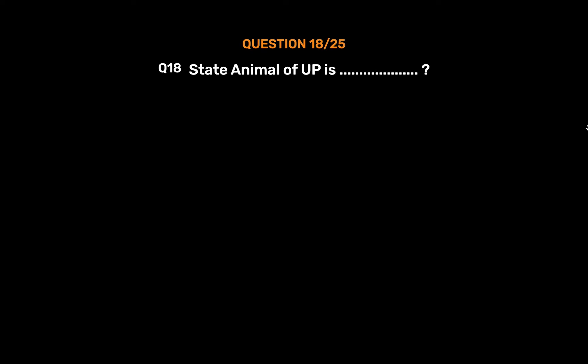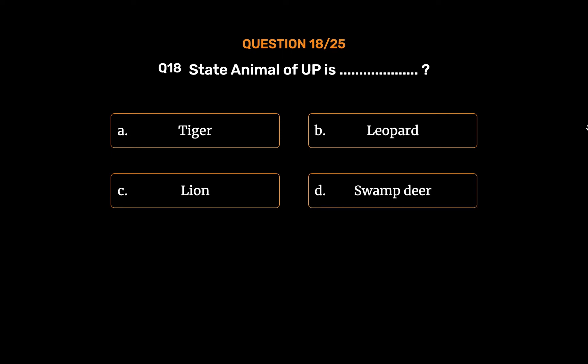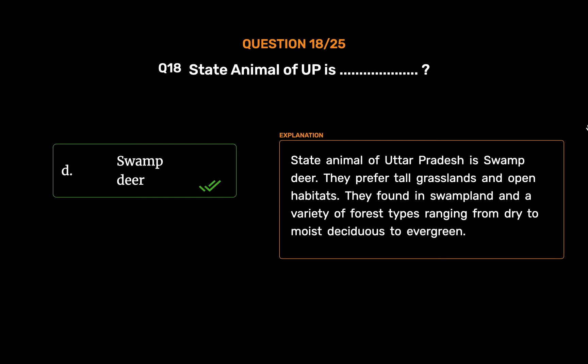Question No. 18: The state animal of UP is? Option A: Tiger. Option B: Leopard. Option C: Lion. Option D: Swamp Deer. The correct answer is Option D: Swamp Deer. The state animal of Uttar Pradesh is the swamp deer.